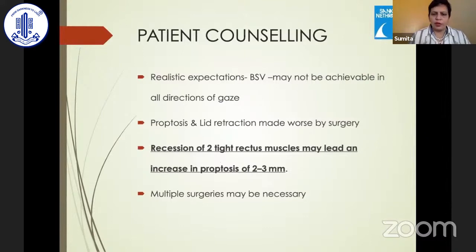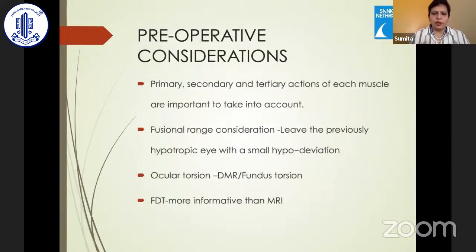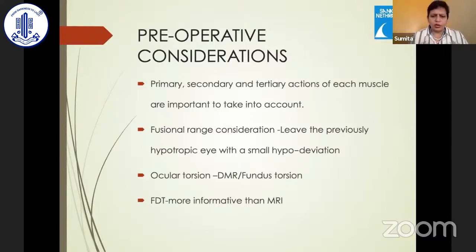Patient counseling is very important with realistic expectations. Patients must be counseled that proptosis and lid retraction may actually worsen after surgery, and multiple surgeries may be required — reoperation rates can increase over time. When planning surgery, all three primary, secondary, and tertiary actions of each muscle must be considered, along with fusional range. Ocular torsion is very important, especially when dealing with the inferior rectus. The forced duction test on the table is probably more important than angle measurements in surgical decision-making.